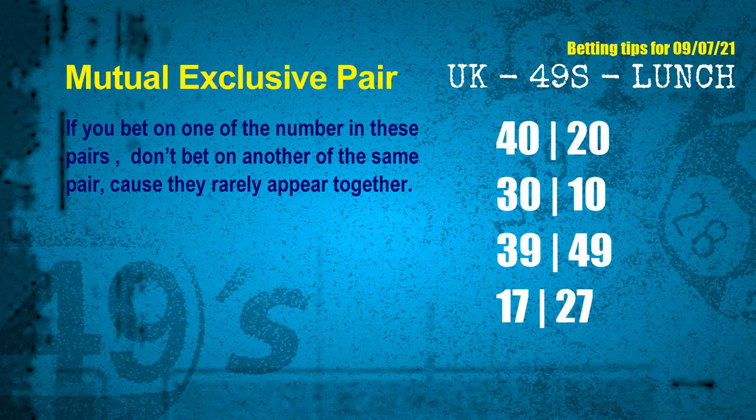Now we have some following ones and ball colors. Here are some tips to increase your hit odds, such as mutual exclusive pairs. These numbers in a pair both match the following ones and colors, but according to thousands of results, they rarely appear together — meaning if you bet on one, don't bet the other in the same pair. The mutual exclusive pairs for the next draw are: first pair 40 and 20; second pair 30 and 10; third pair 39 and 49; fourth pair 17 and 27.